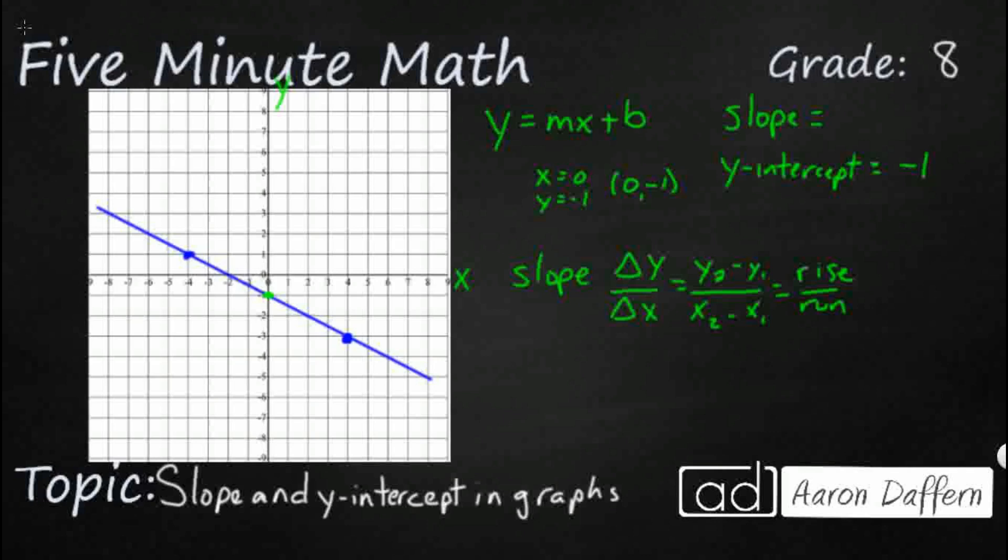So we've got two points here, but they're not labeled. So let's go ahead and just put some x-y coordinates on here. So this one is going to be four, negative three. And this one is going to be negative four. And the y is one.